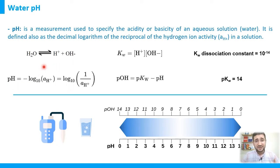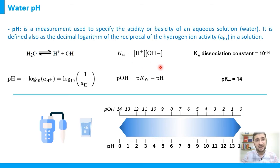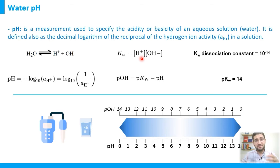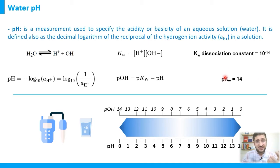Consider the water dissociation: H₂O dissociates into H⁺ and OH⁻. As discussed in a previous session, there is the ion product of water, Kw, which equals the molar concentration of hydrogen ions multiplied by the molar concentration of hydroxyl ions. In reality it is activity, but for simplification we use molar concentration. Kw is also called the dissociation constant, and its value equals 10 to the power of minus 14 (unitless).